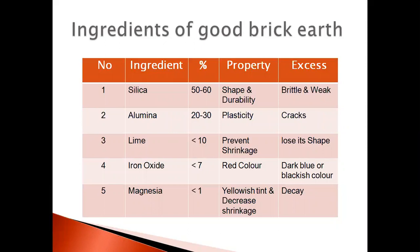If you use greater than 30% of alumina, the bricks get cracked. The other small ingredients: first, lime — it should be used less than 10%. It prevents the brick from shrinkage, which is the reduction in size. If you use greater than 10% of lime, the brick loses its shape and will not be perfectly rectangular.